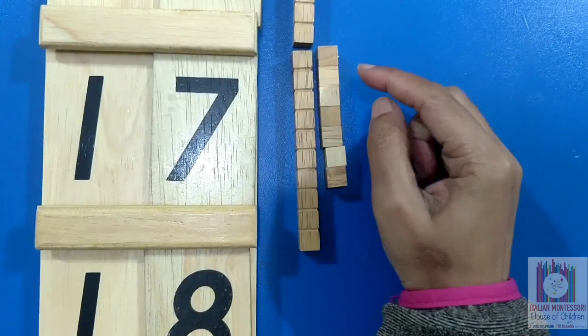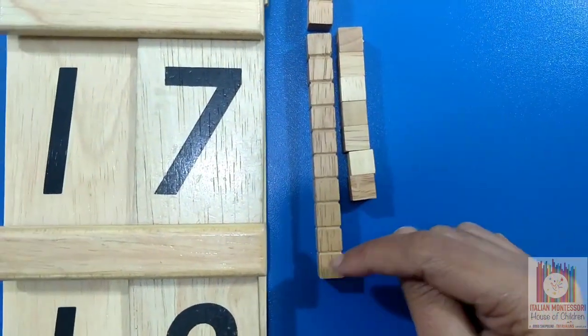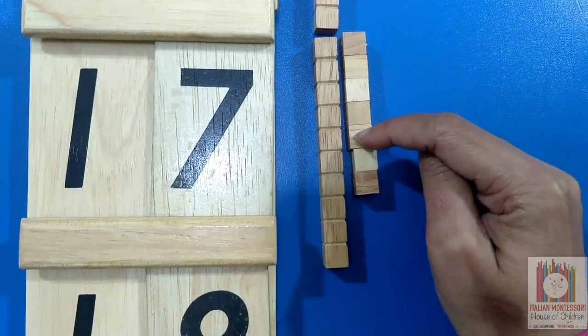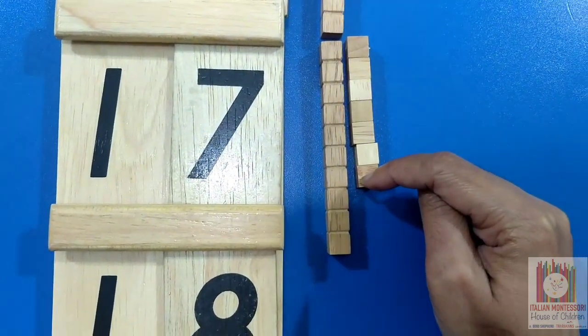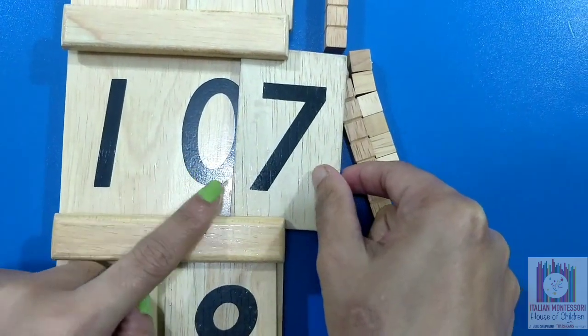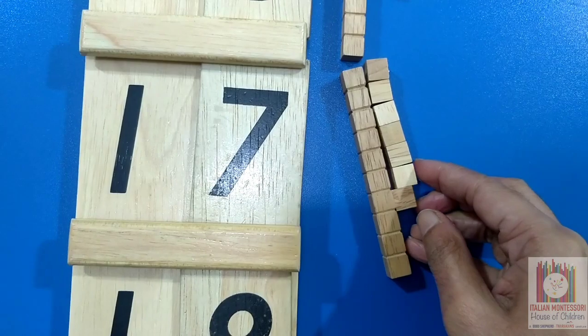1, 10 and 7 units. 10, 11, 12, 13, 14, 15, 16, 17. 1, 10 and 7 units makes 17.